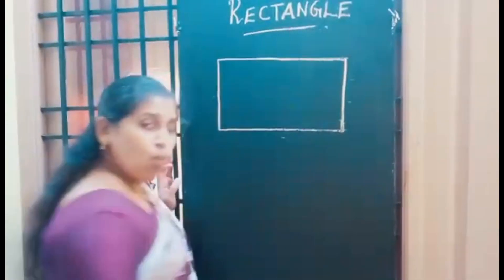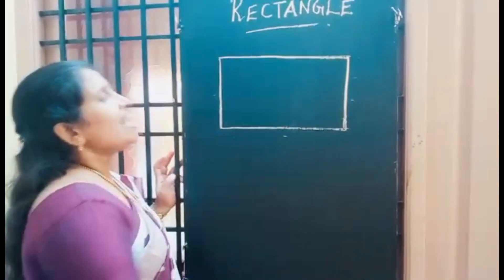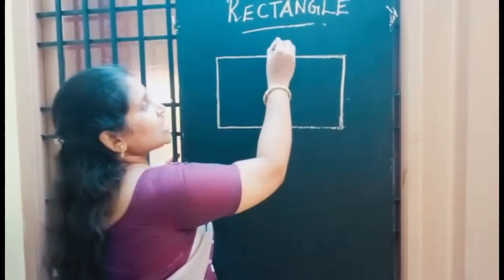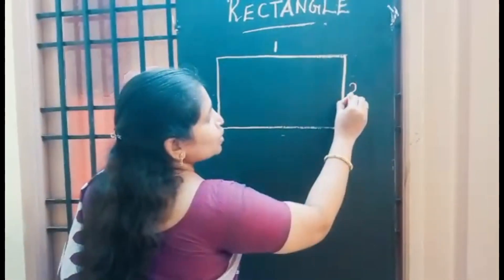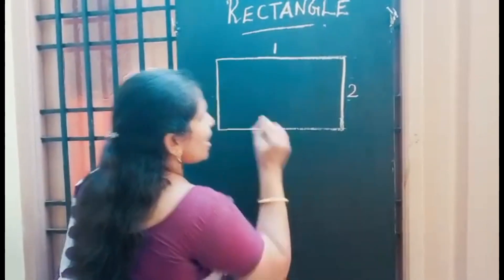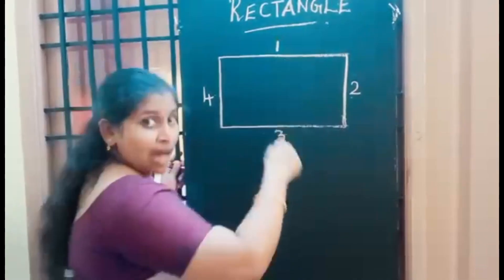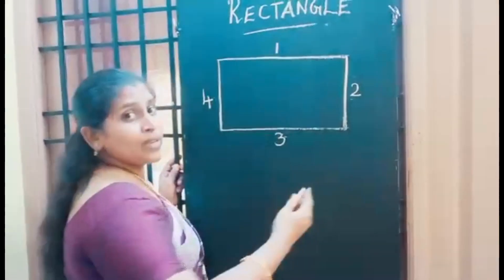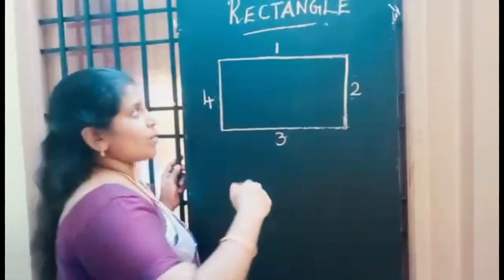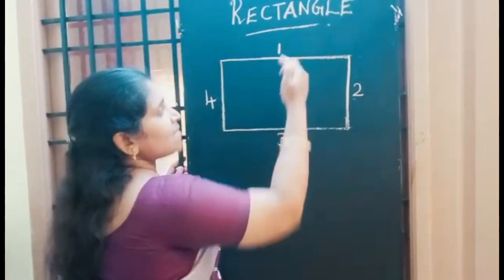It is long like a square. The rectangle has four sides: one, two, three, and four. The opposite sides of the rectangle are equal. In square, we learnt all the sides are equal. In rectangle, this and this are equal, this and this are equal.